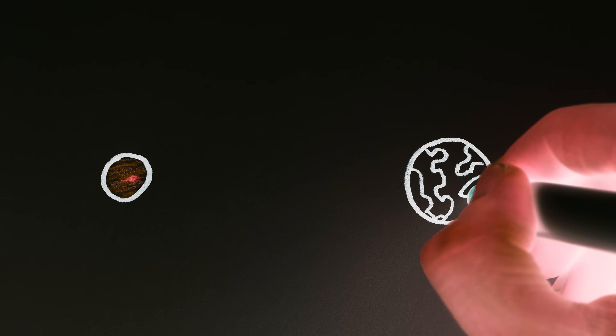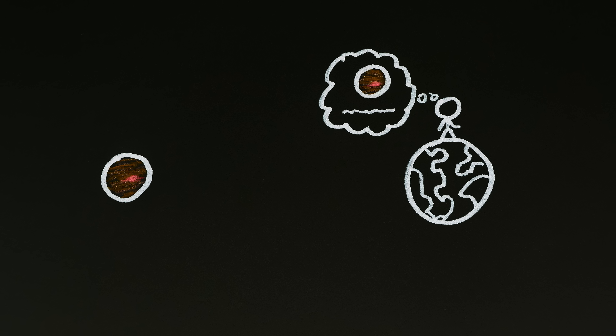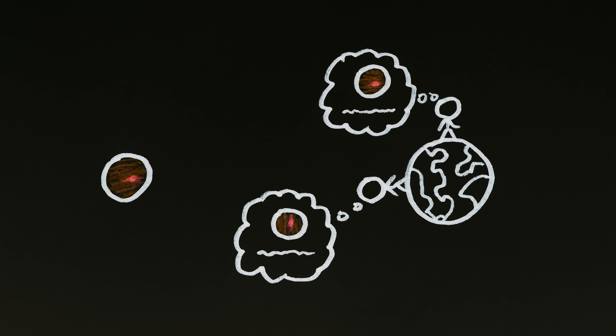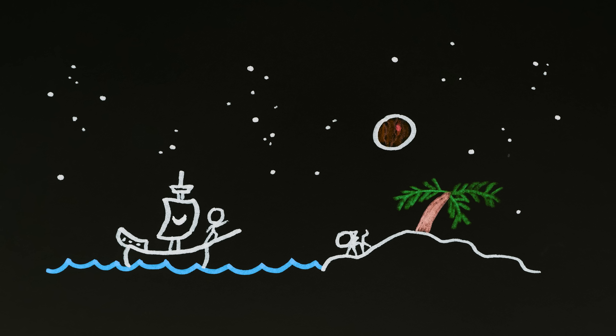P.S. Jupiter's stripes are also only horizontal when viewed from near the poles on Earth. If you're near the equator, they'll look vertical, just like how the moon turns into a cup. Just something to keep in mind the next time you're illustrating Jupiter in the sky of a tropical animated film.